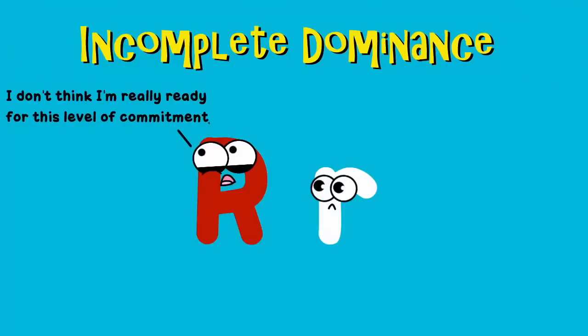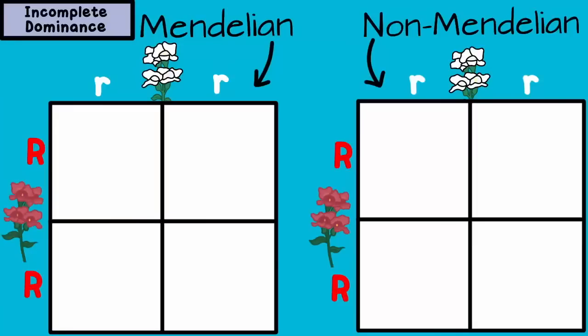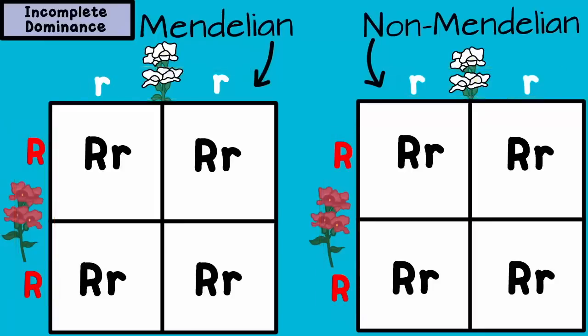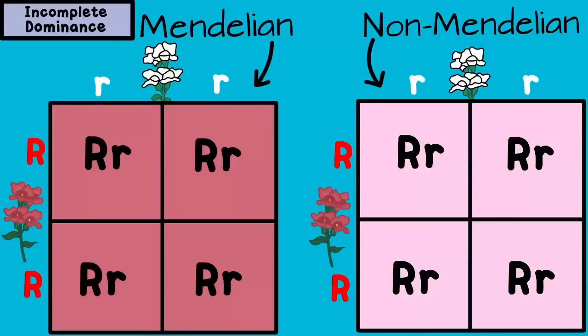It's called incomplete dominance. In incomplete dominance, the dominant allele is not completely expressed when the recessive allele is around. There isn't really a clear dominant allele. If you cross a red flower, represented by big R, big R, and a white flower, little r, little r, you are going to get offspring that are big R, little r. But unlike a Mendelian trait, if this is incomplete dominance, that big R allele is not completely expressed when the little r is around. So big R, little r in this case is pink.